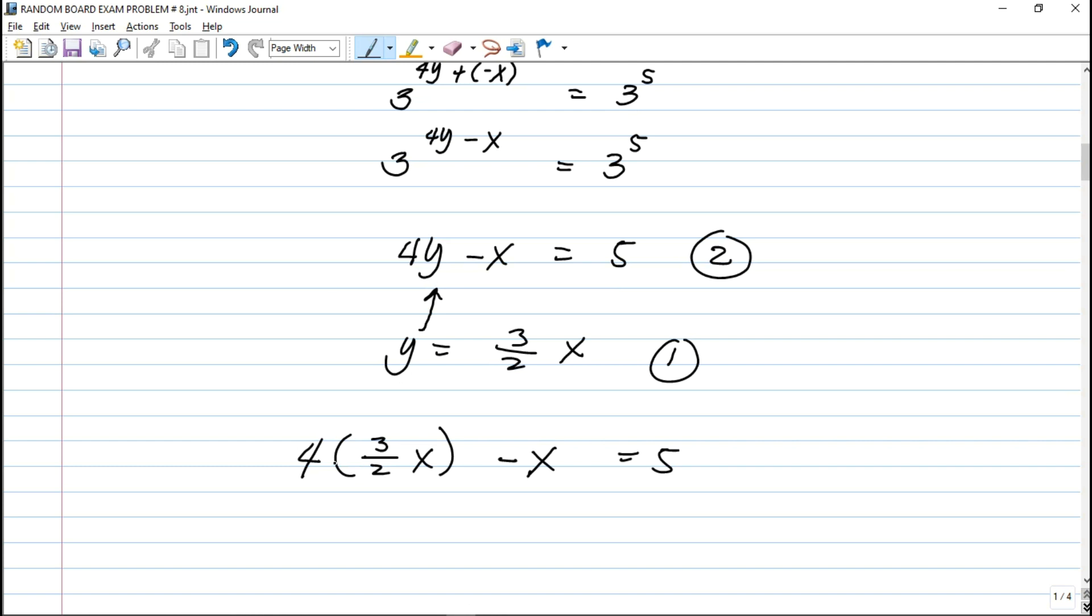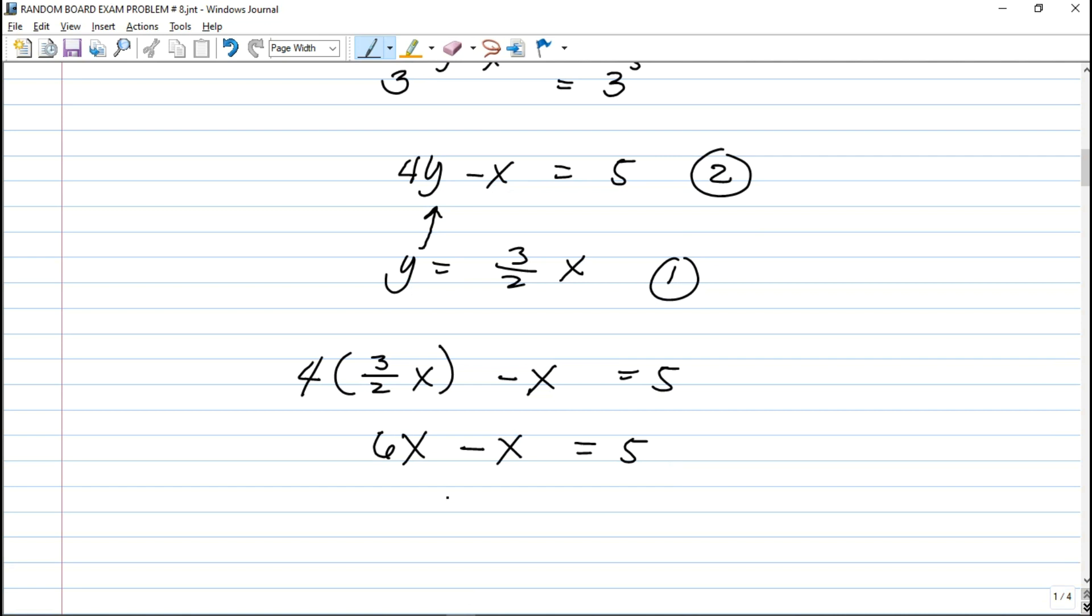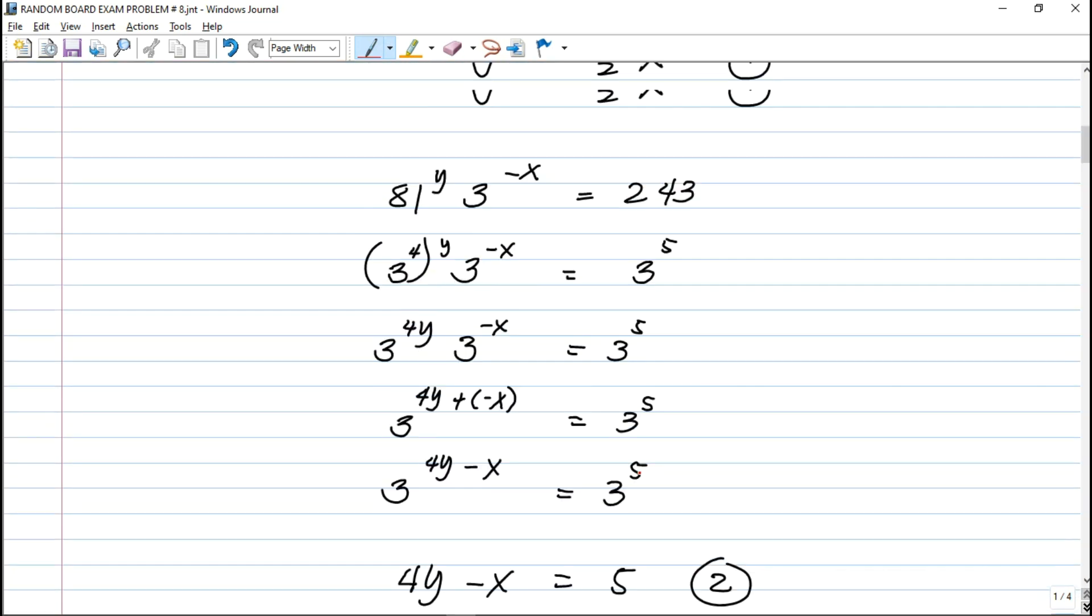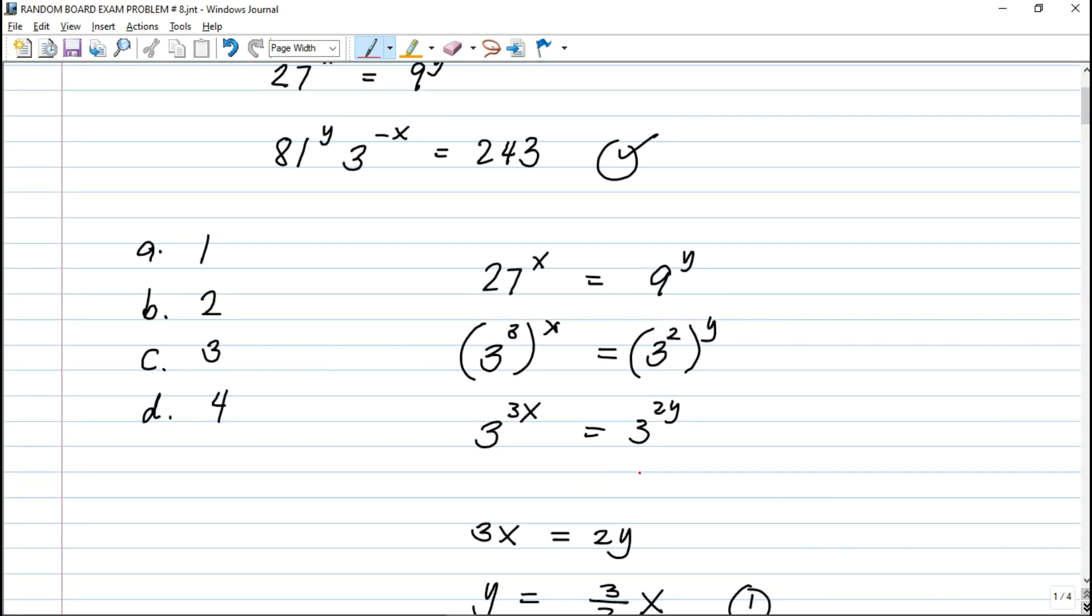Perform natin yung algebra. 4 times 3 halves, that is 6x minus x is equal to 5. 6x minus x, that is 5x equals 5. Divide both sides by 5. We get x equals 1. Therefore, x is actually equal to 1. That is letter A.